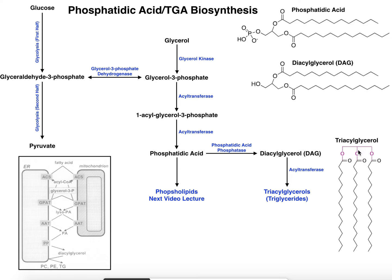Triglycerides still have the glycerol backbone, but instead of having a phosphate on the third oxygen, they have three fatty acids esterified to each of the oxygens of the glycerol backbone. One important thing to note is that the fatty acids don't have to be the same length — for example, one could be a 14-carbon chain (a myristoyl group), another could be a 20-carbon chain (an arachidoyl group). Some can be saturated and some unsaturated.